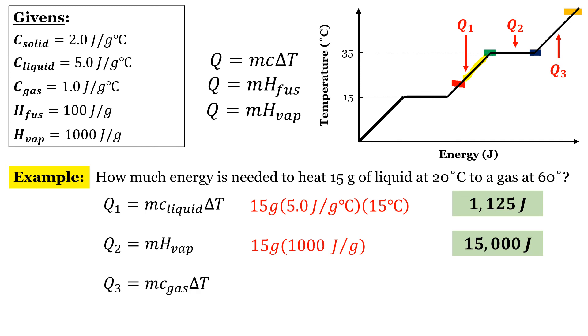The final step, going from the blue point to the orange point, again, we're just raising the temperature. So going from 35 to 60 is a change in temperature of 25 degrees Celsius. When we multiply those three numbers out, we get 375 joules. So we've completed each individual part. Now we just add them up and we get a value of 16,500 joules.